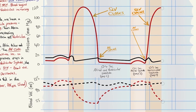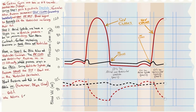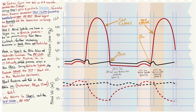The events of ventricular systole in step three continue until we return back to step one, where the semilunar valves close, the atrioventricular valve opens, and the cardiac cycle continues.